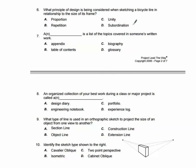What principle of design involves gradual change from one feature of the design to another? That's transition. Next page. What principle of design is being considered when sketching a bicycle tire in relationship to the size of its frame? Proportion would be the correct answer there. We don't want to sketch a wheel and then have a frame that's super tiny unless it's a bike from 1920 or something like that.